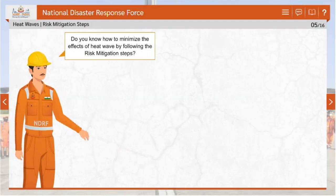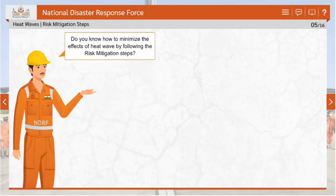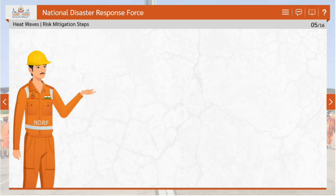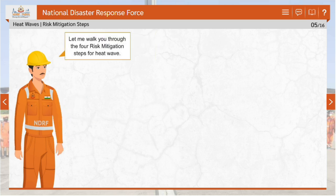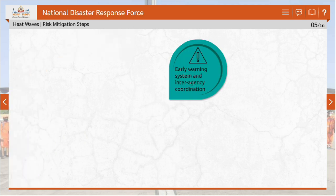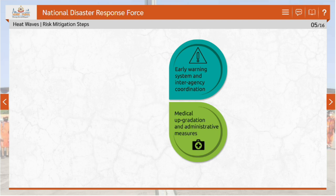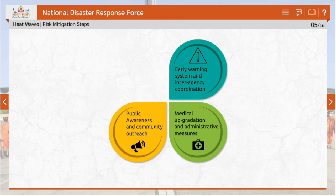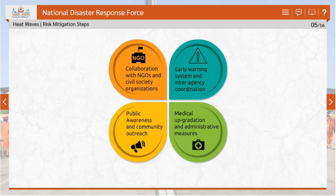To minimize the effects of heat wave by following risk mitigation steps, there are four key strategies: early warning system and interagency coordination; medical upgradation and administrative measures; public awareness and community outreach; and collaboration with NGOs and civil society organizations.